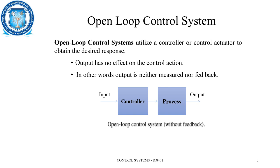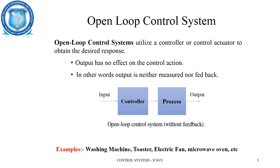In the case of an open loop control system, the output has no effect on the control action. In other words, the output is neither measured nor fed back. For example, a washing machine, toaster, electric fan, and microwave oven are certain examples of open loop systems.